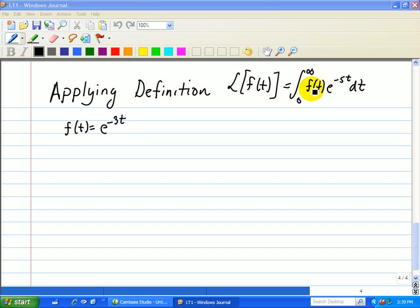We'll take this function and substitute into our definition of the Laplace transform. So that gives the following: integrate from zero to infinity, e to the minus 3t, e to the minus st dt. We can combine these exponentials as e to the minus s plus 3 dt.